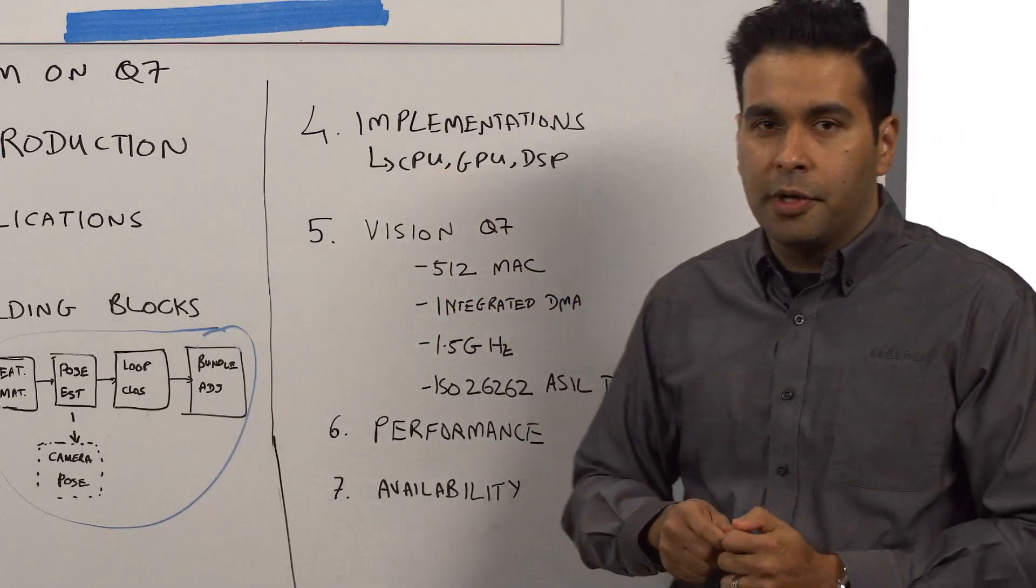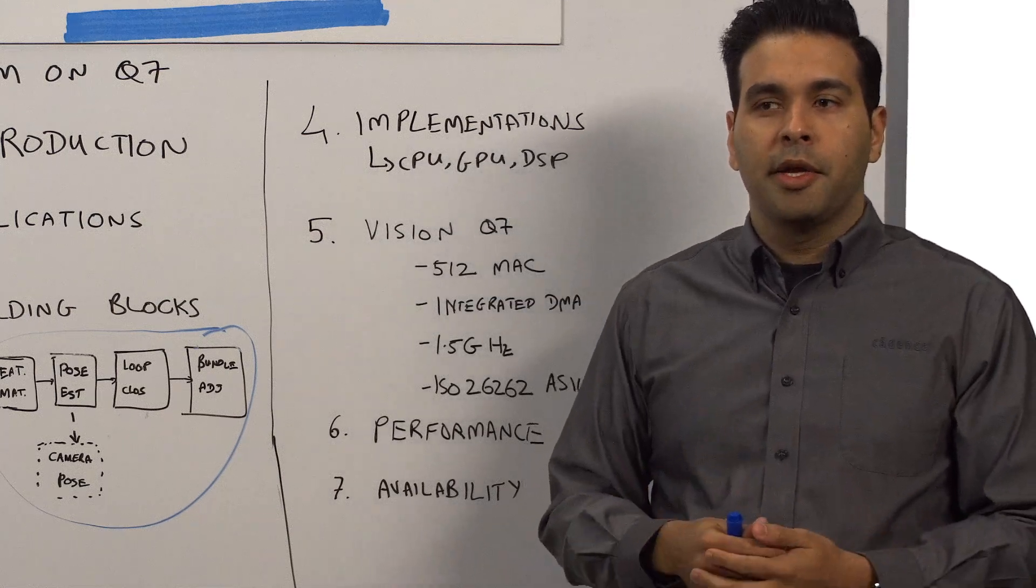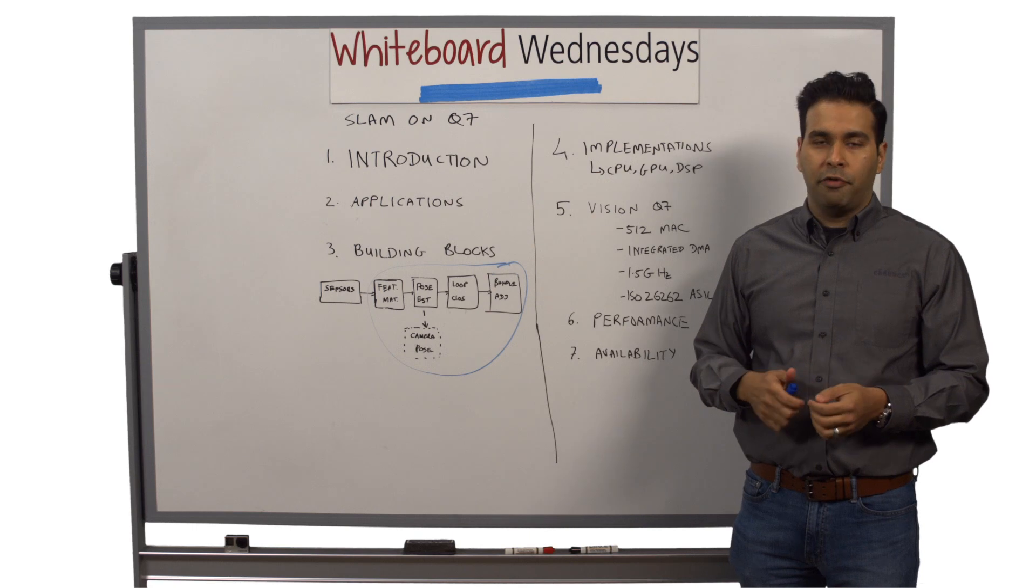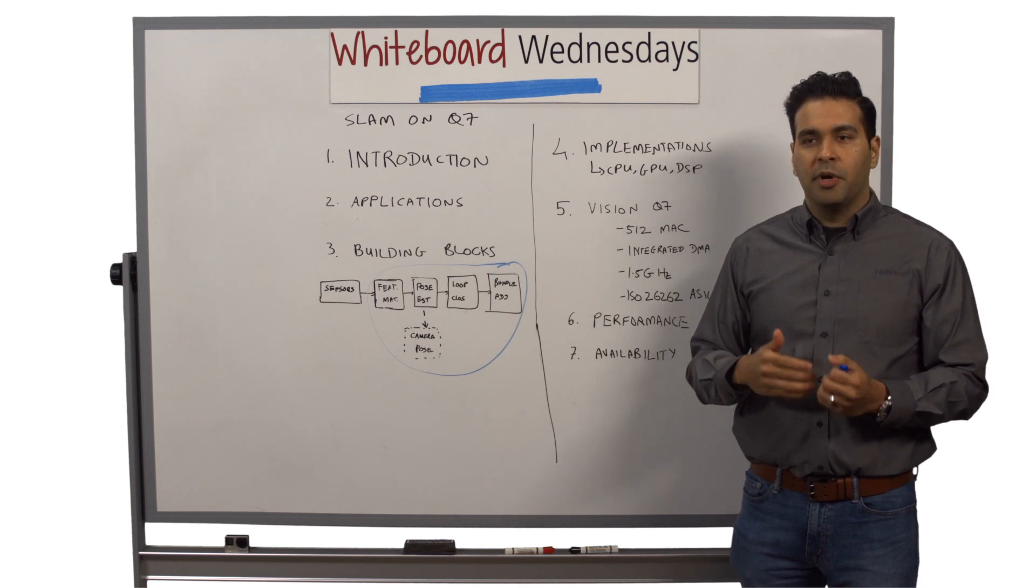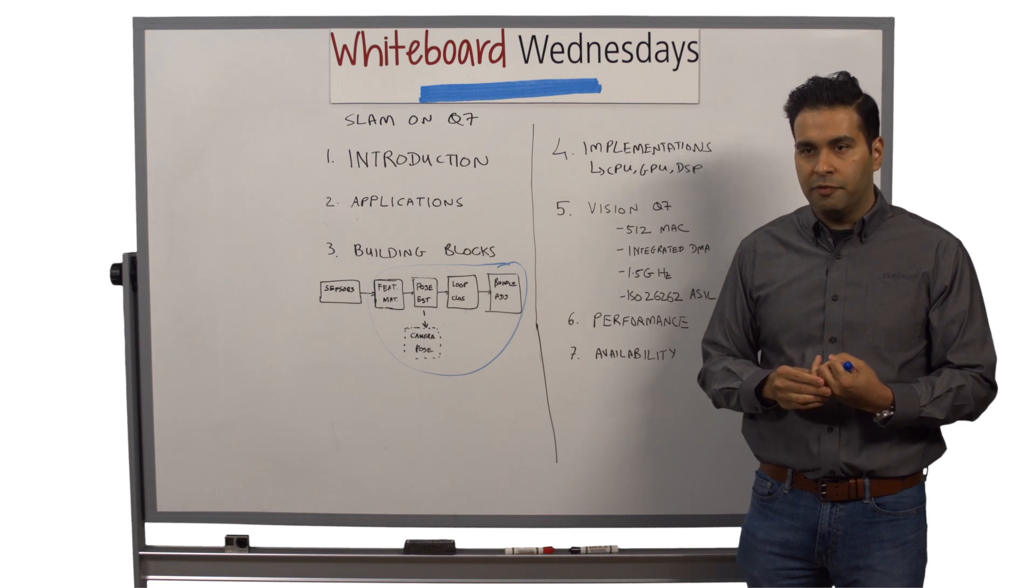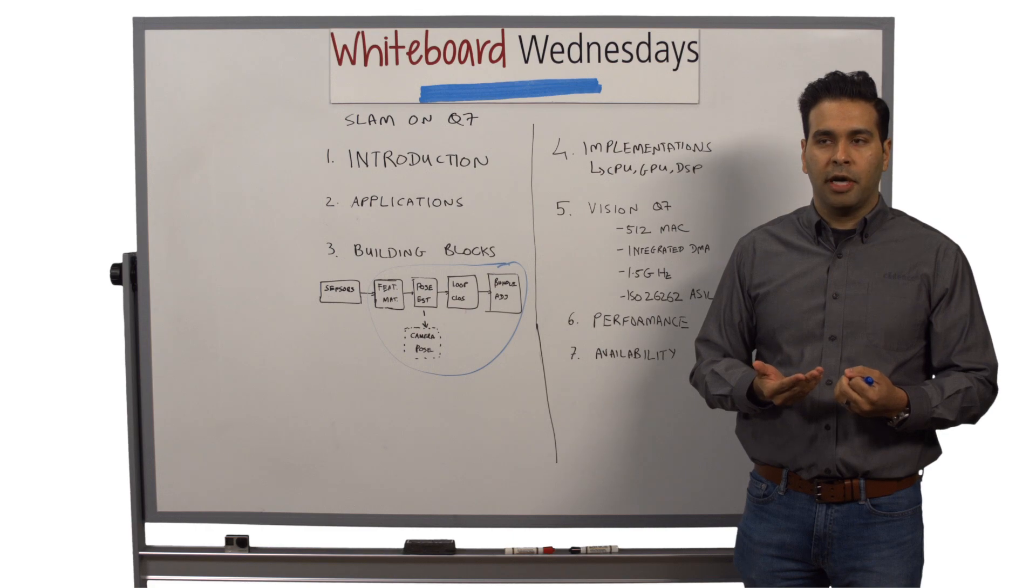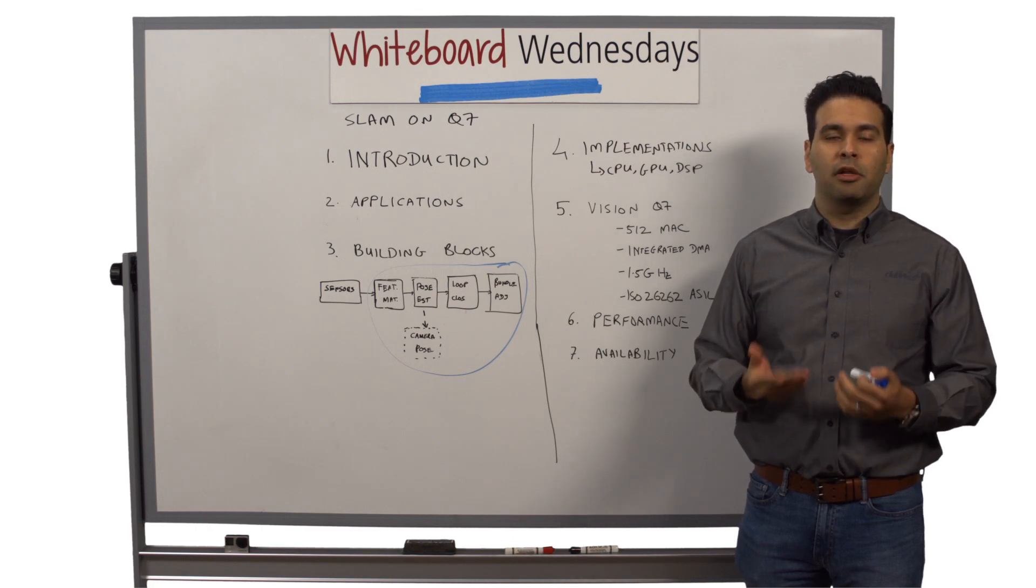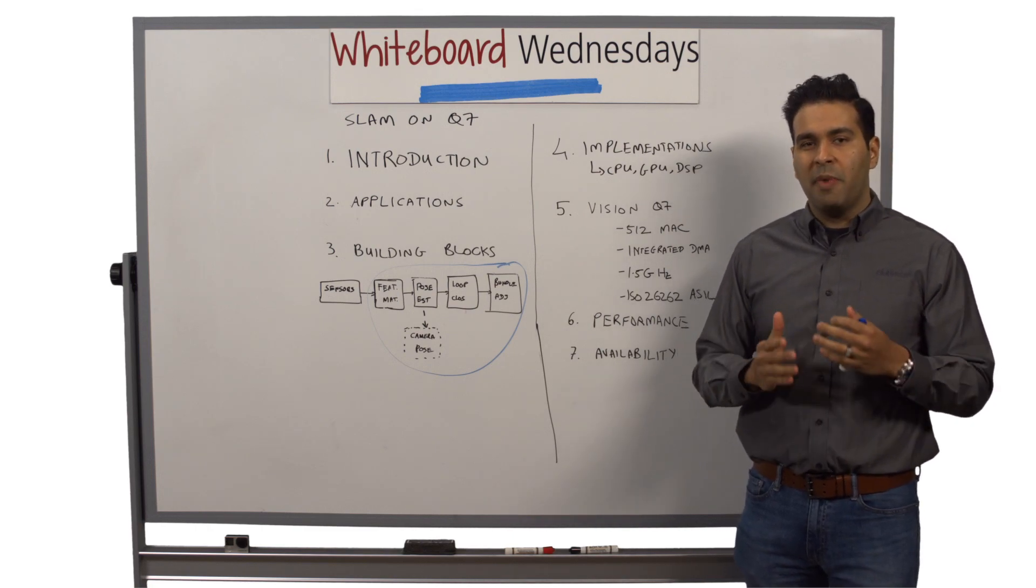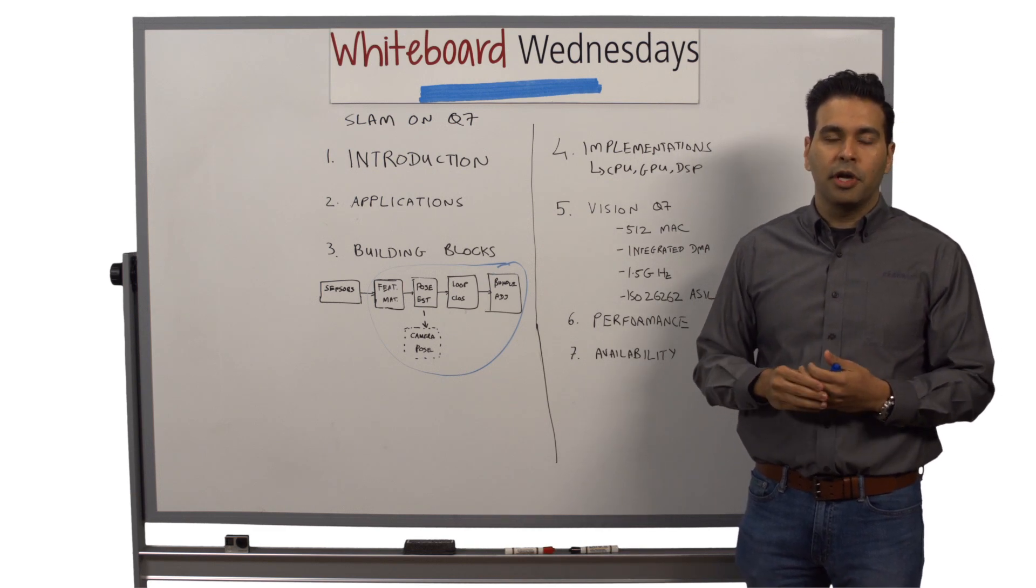Let's start first with the CPU. CPU is great for general purpose prototyping, and you can get some level of real-time performance on SLAM. But one of the problems with CPUs is that it's not the most power efficient. Also, it does not have the most number of capabilities or modalities to do parallel processing. So you may not, in all the cases, be able to achieve real-time SLAM running on a CPU.